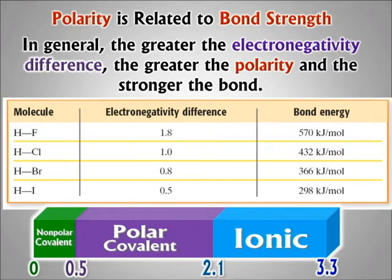That's pretty much true — up to a point. So let's look at several bonds on this table. It has all the bonds between hydrogen and something else — the halogens, a very important family on the periodic table: fluorine, chlorine, bromine, iodine.